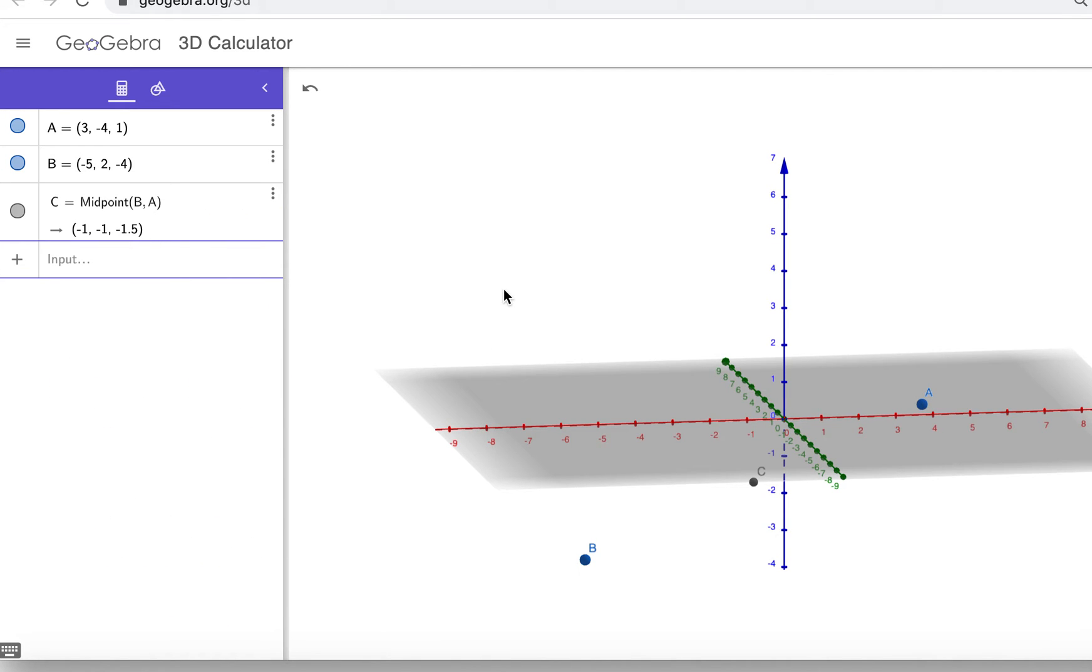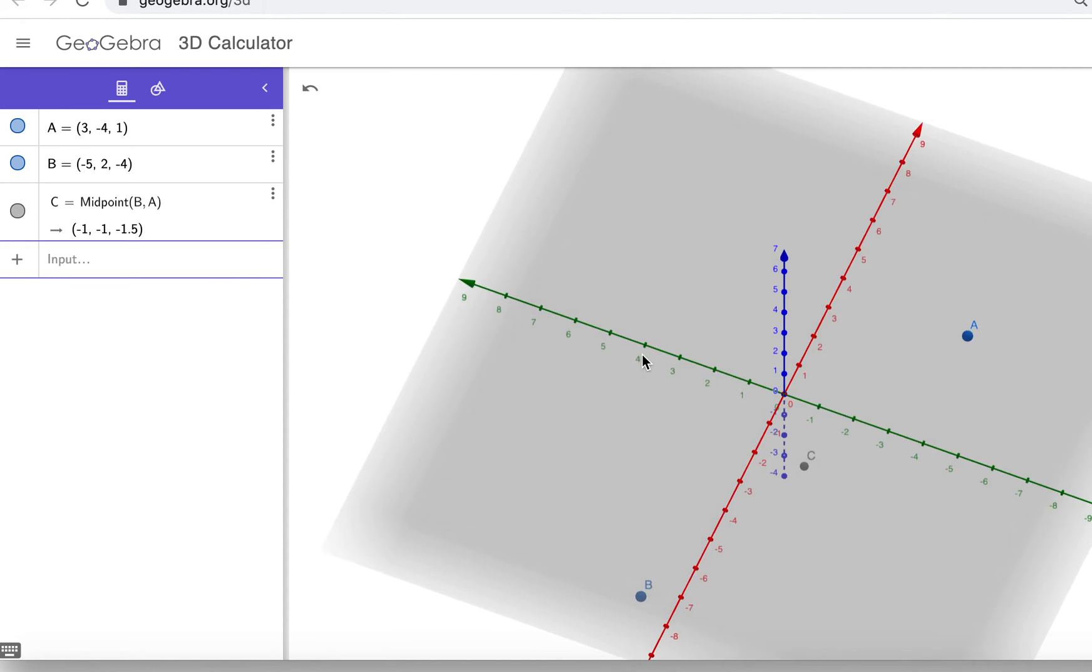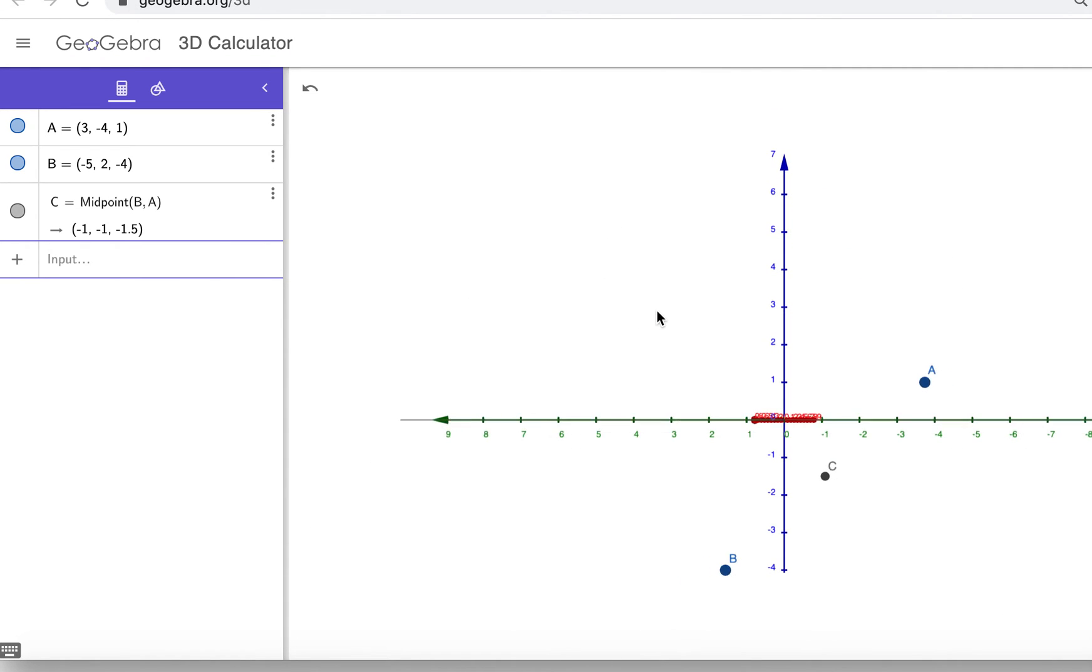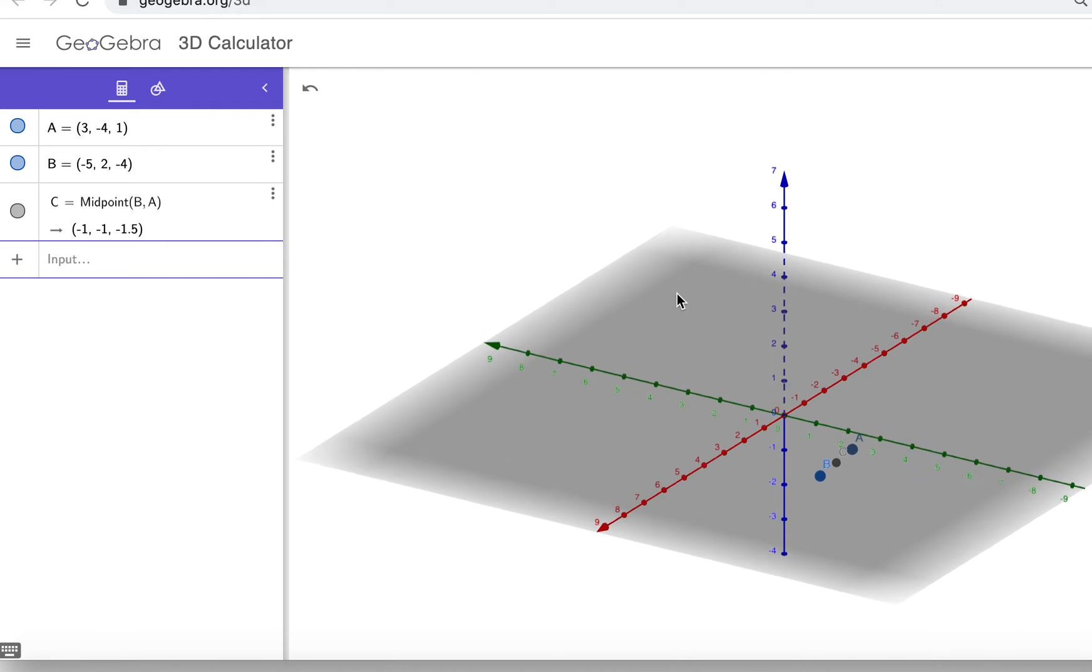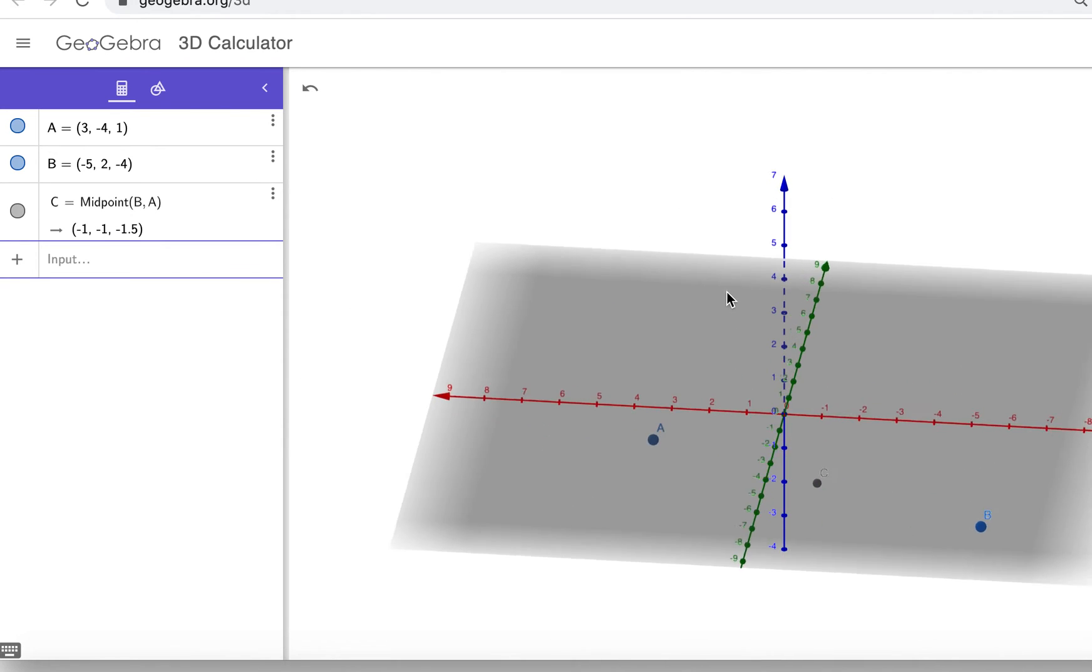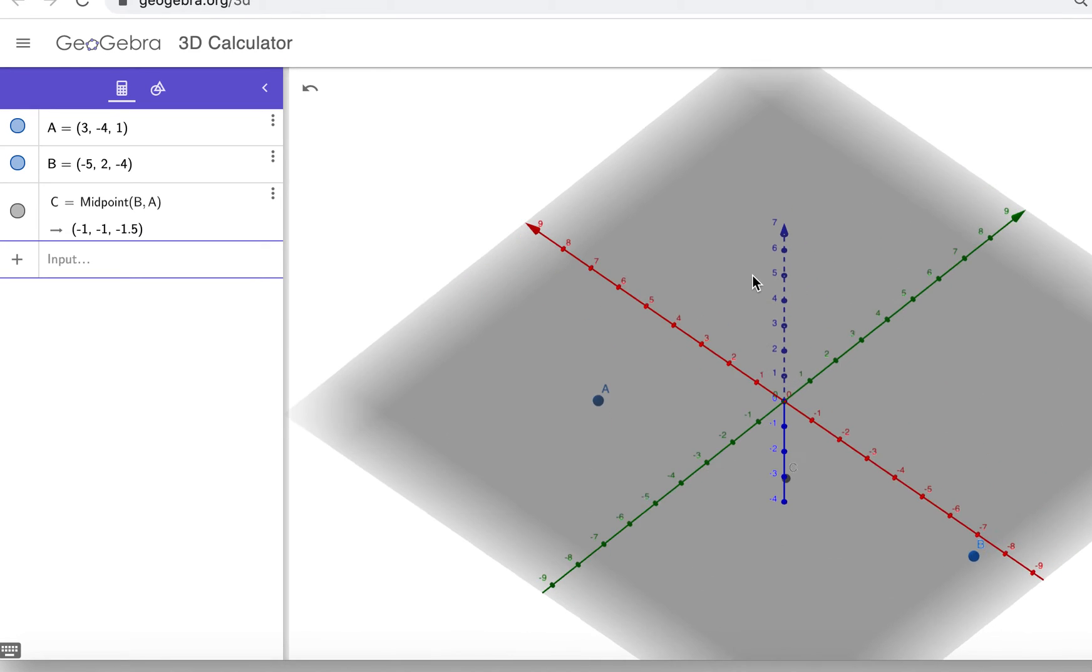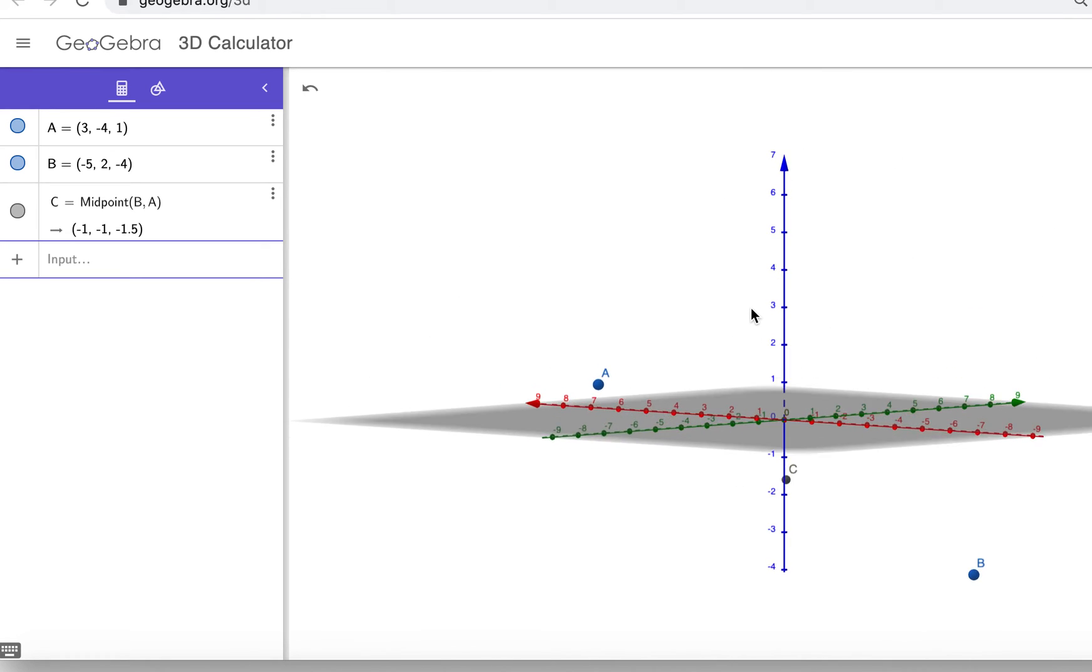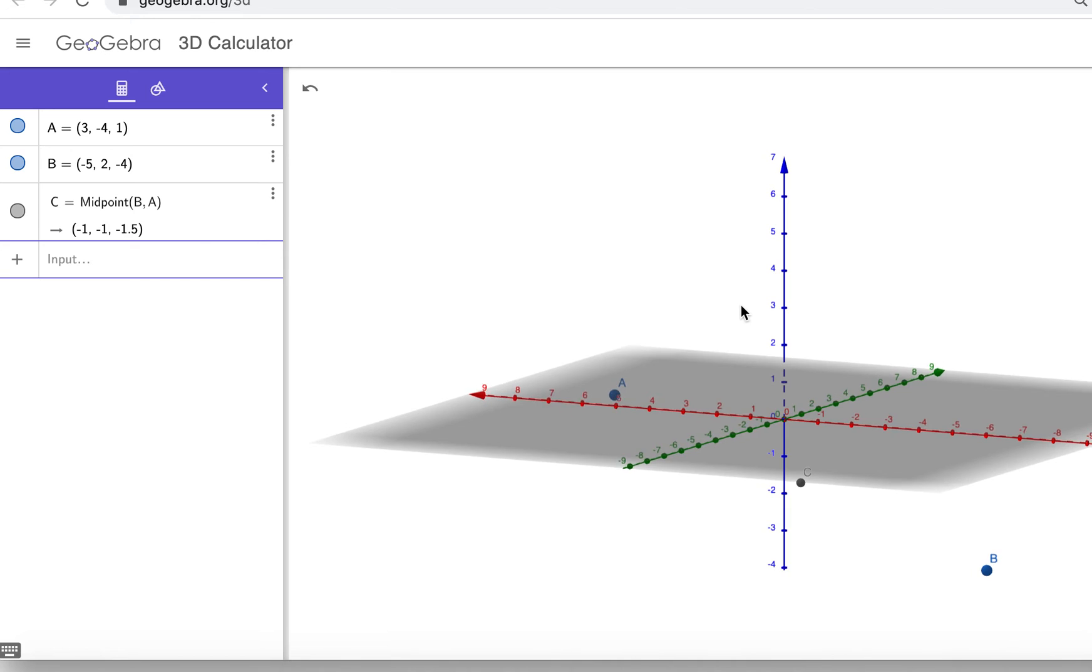And it's negative 1, negative 1, negative 1.5. And look, you can actually, I just wanted you to see it, what it means in three dimensions. That's where it is. It's right between the two of them. So please go on to GeoGebra and have a play around to try and understand coordinates in 3D.